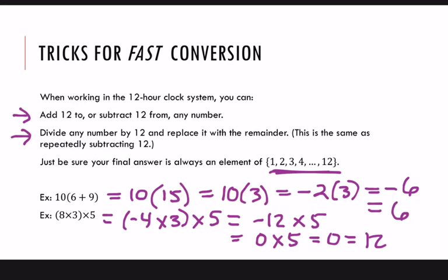Now, these are just a couple ways to do this. You could certainly do these other ways. Let's do one more for that 8 times 3 problem. So, 8 times 3 is 24 times 5. 24, I could subtract 12 and make that 12. 12 times 5 is 60. And I could divide 60 by 12 and replace it with the remainder. Well, there is no remainder when I divide it by 12. So, that's 0. And then that corresponds to 12 in this system. So, there are your two options.